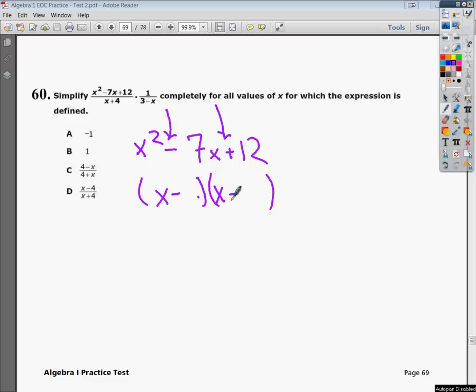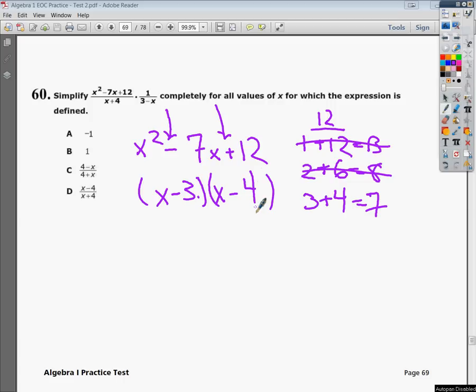The nice thing about having the signs be the same, it means when I do my factor list for 12, I'm looking to add those factors together. So I've got 1 and 12, 2 and 6, 3 and 4. 1 plus 12 is 13. That doesn't get me to the 7 I'm looking for, so that's out. 2 plus 6 gets me to 8. No. 3 plus 4 equals 7. Ding, ding, ding. There it is. So if I do 3 here and 4 here, I know I'm factored out. That's the first factoring part.